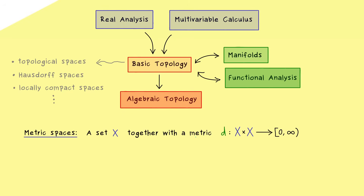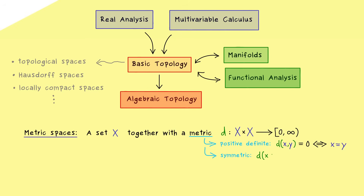We also want to satisfy three defining properties for this map. First, it has to be positive definite, which means that distance 0 is only allowed if the two points coincide — this is quite natural for a well-defined distance measure. In a similar way we also want this map to be symmetric, so it does not matter if we exchange the two points. Finally, we also want to have the triangle inequality, which means if we measure over a detour, the distance only gets larger.